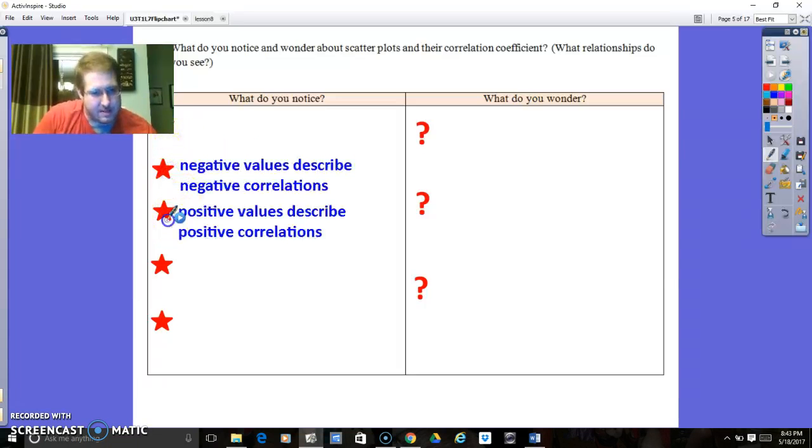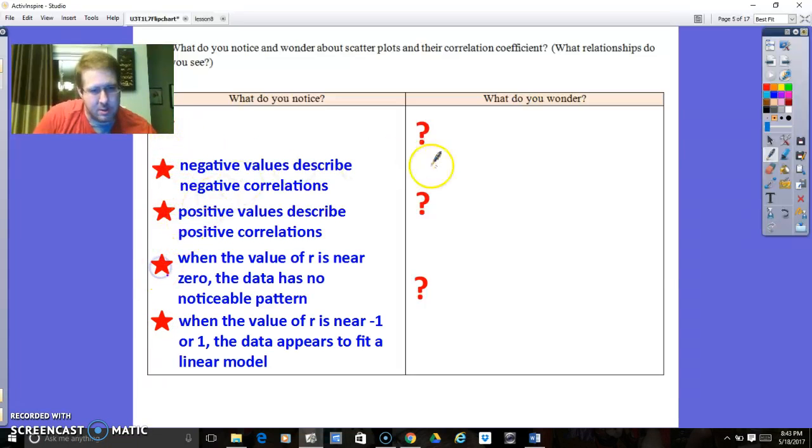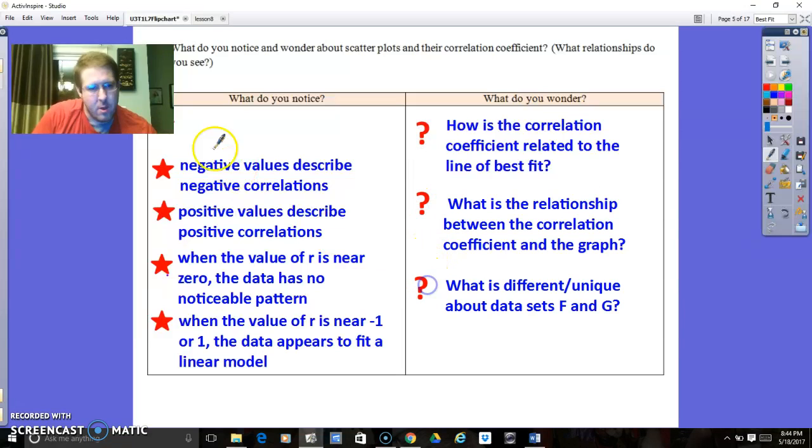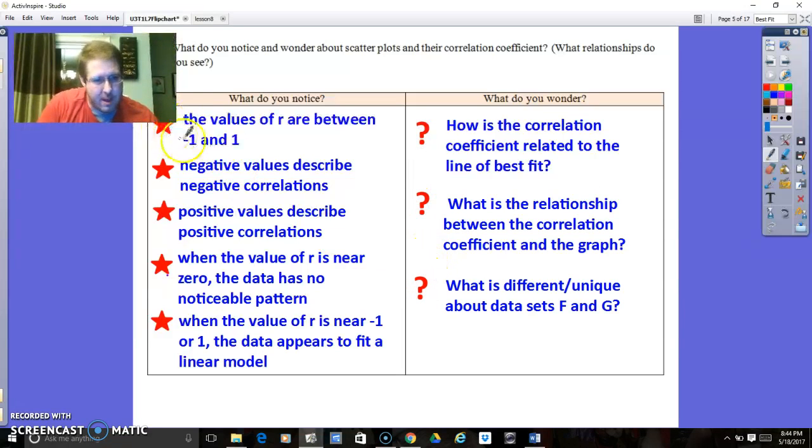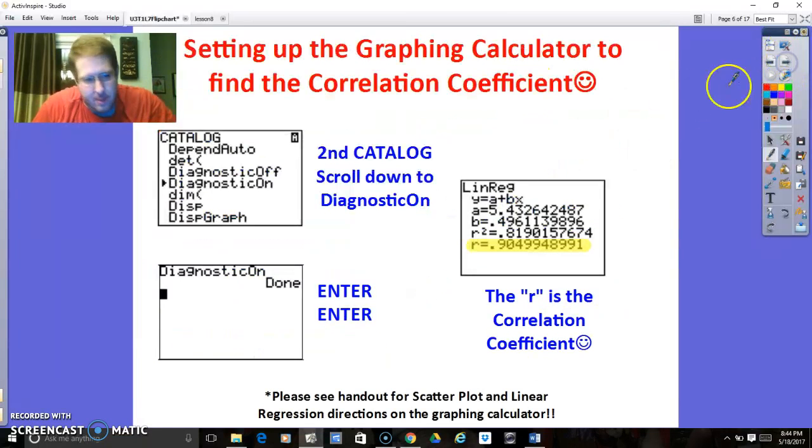All right, so basically we have the exact same information that I just talked about. We've also got some good questions that you could ask yourself. Like, how is the correlation coefficient related to the line of best fit? Well, really the correlation coefficient is how far apart all the datas are, on average, from the line of best fit. And we will do something later on, which is calculating residuals, which is actually finding the distance that each point is away from that line of best fit.